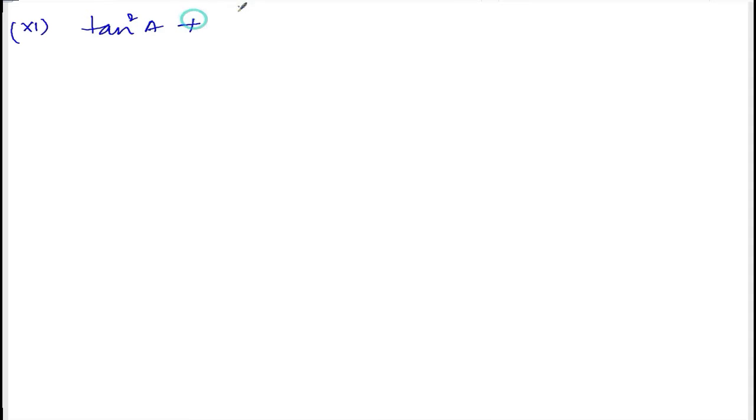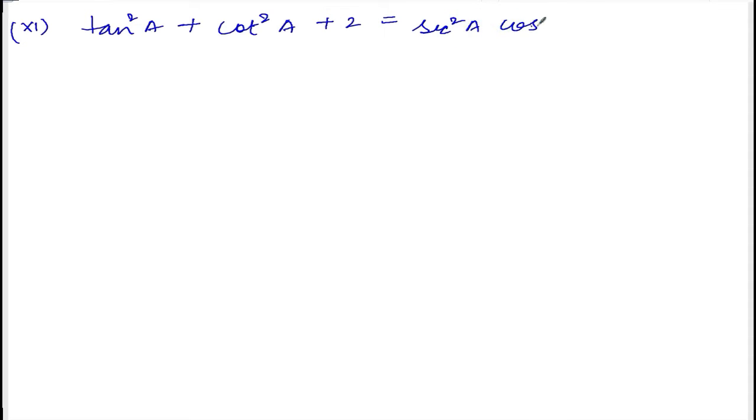Now we are doing Exercise 10.2, question number 11. The question is: tan square a plus cot square a plus 2 is equal to sec square a and cosec square a.